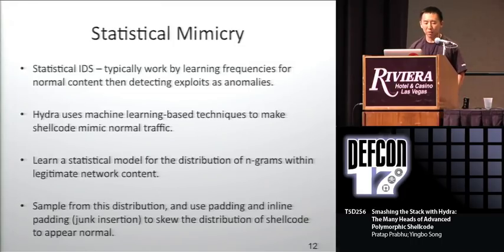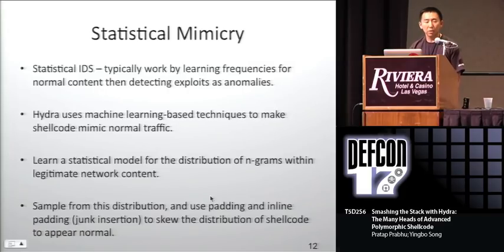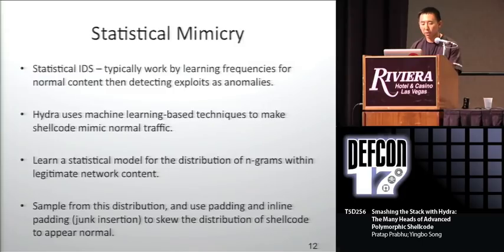I don't have time to explain all the details, but if you want to know more, just find me afterwards and I'll point you to some papers. We do this using Markov Chain Monte Carlo — it's basically a machine learning technique to build a distribution and sample from that distribution. Recall that we have the junk code insertion feature: when we space out the instructions, we take the statistical mimicry bytes and put them in those spaced-out sections.